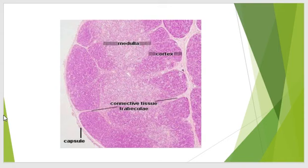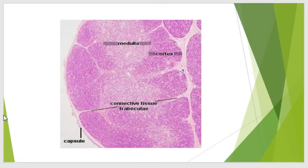Looking at the microscopic structure of the thymus, we can see the connective tissue capsule surrounding the thymus. From this capsule, trabeculae or septa arise and divide the thymus into incomplete or indistinct compartments or lobules. The outer portion is basophilic due to the large number of T lymphocytes, whereas the central medulla stains lighter because it contains fewer T lymphocytes compared to the cortex.